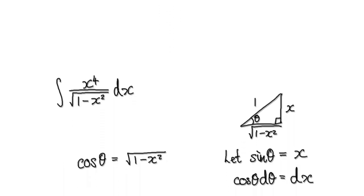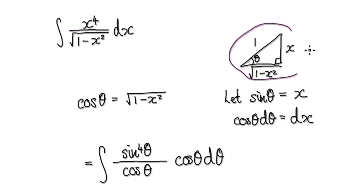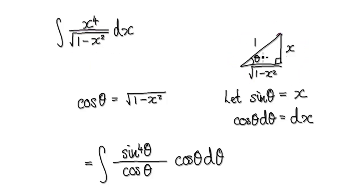In this video we're going to try and integrate this. Your eyes will zoom into this bit, then create a triangle in such a way that this will be true. If you make the hypotenuse to be 1 and the opposite to be x, then the adjacent will have no choice but to be square root of 1 minus x squared.